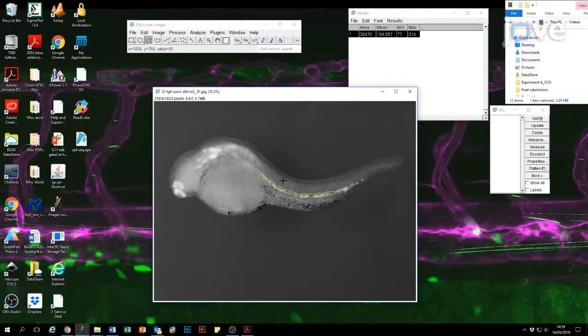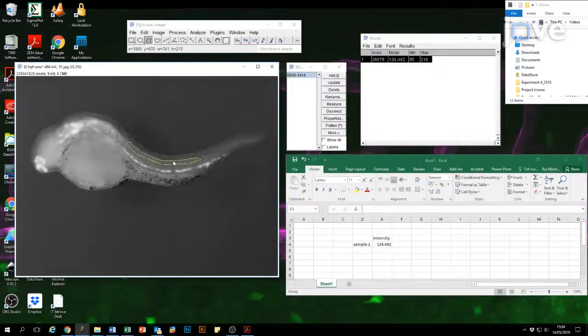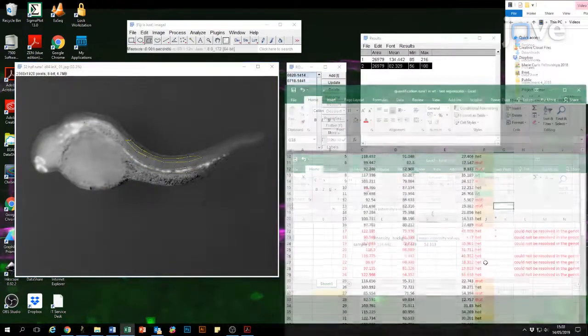This method provides a more consistent way to compare in-situ experiments by quantifying image intensities and removes that bias. This can also be easily adapted to other model systems that use in-situ hybridization as a read-off of gene expression.